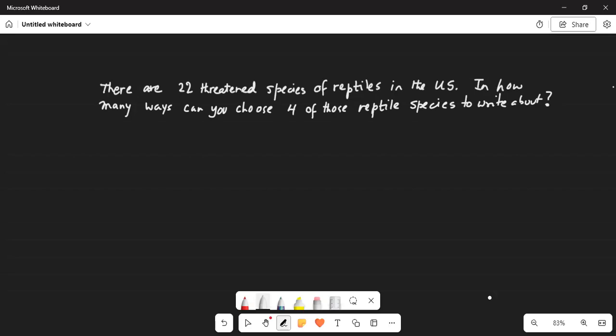So your total number sample size n equal to 22. And you're going to select four of these reptiles out of 22 to write about.